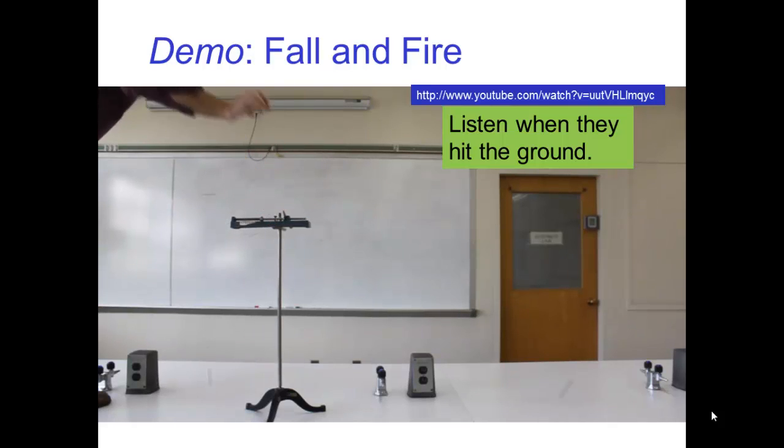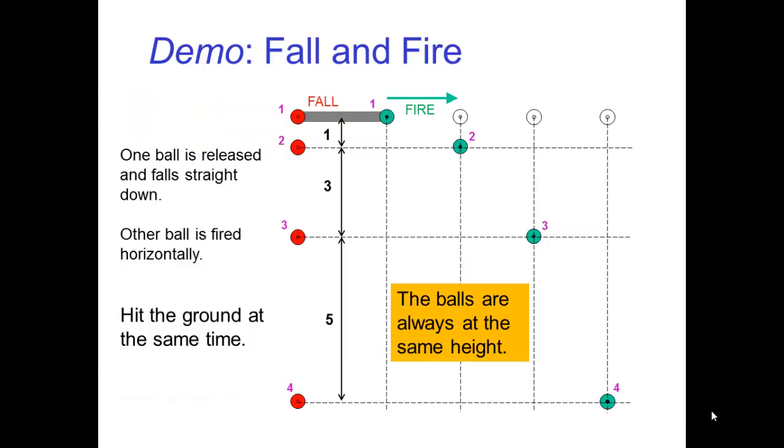In this demonstration, one ball is released and falls straight down. The other ball is fired horizontally. Notice that they hit the ground at the same time. Not only that, they are always at the same height as they fall. Falling motion follows the odd rule and the horizontal motion is uniform motion.